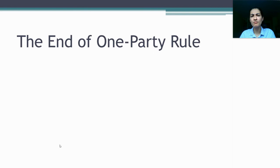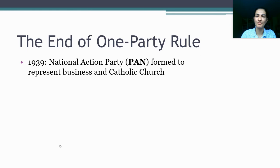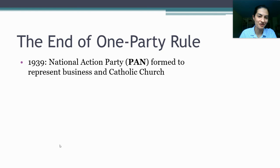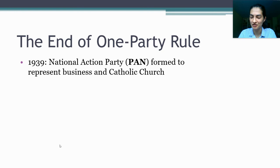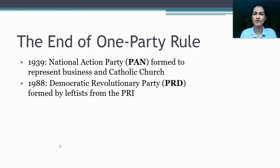The end of one-party rule begins in earnest in the 1980s, but the seeds are sown as far back as 1939, when people whose interests aren't well represented by the PRI form a dissident party called the PAN, or the National Action Party — acronyms reflecting the Spanish. The PAN is formed to represent two major groups: businesses and the Catholic Church, which have been largely disenfranchised and attacked using the PRI's populist rhetoric. The PAN is the major organized opposition to the PRI for the next several decades. They don't win a governorship or major election until the 1980s, but they remain a consistent thorn in the PRI's side.